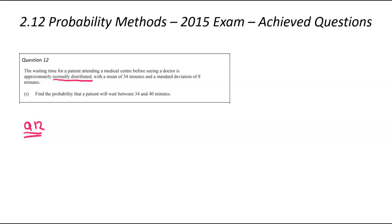That's your giveaway. It's normal distribution. It's got a mean of 35 and a standard deviation of 8. What's the probability that a patient will have to wait between 34 and 40 minutes?